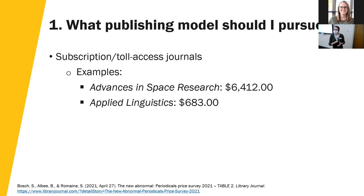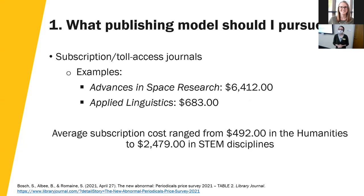Some examples of subscription costs: Advances in Space Research costs libraries $6,412 every year, while Applied Linguistics costs only $683. On average, subscription costs in the humanities were about $492, whereas in STEM disciplines — science, technology, engineering, and math — they averaged $2,479 per year. So the cost to access articles published in a subscription journal varies based on the discipline as well as who the publisher is.